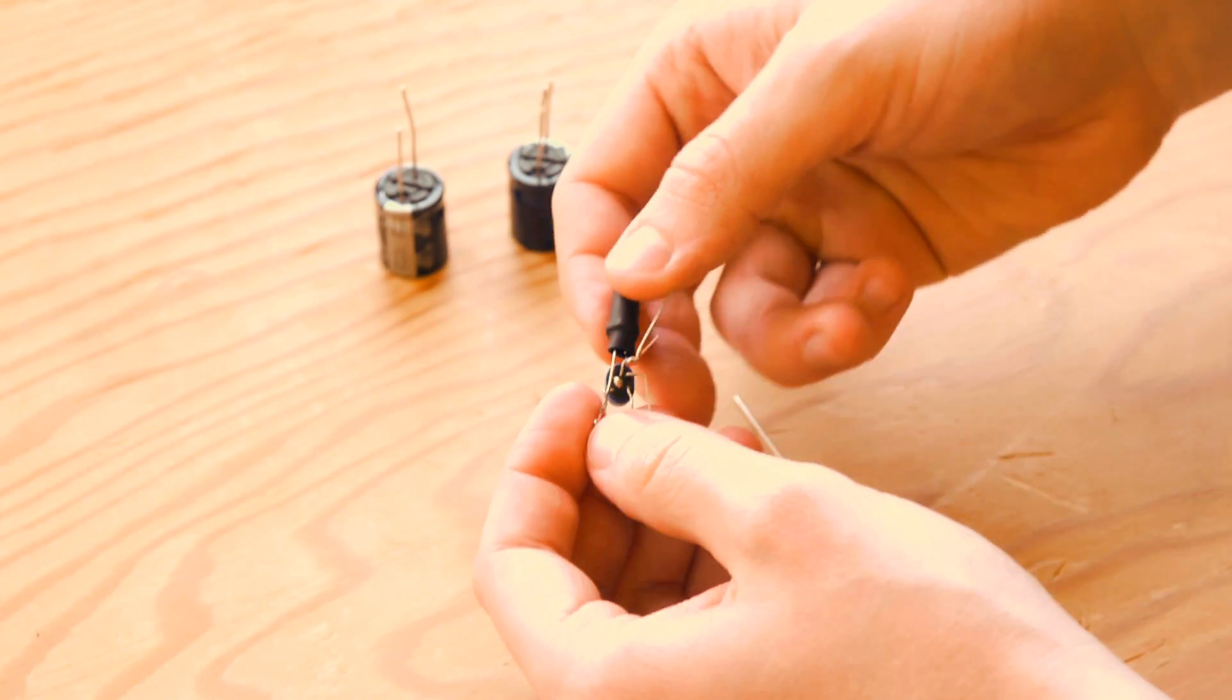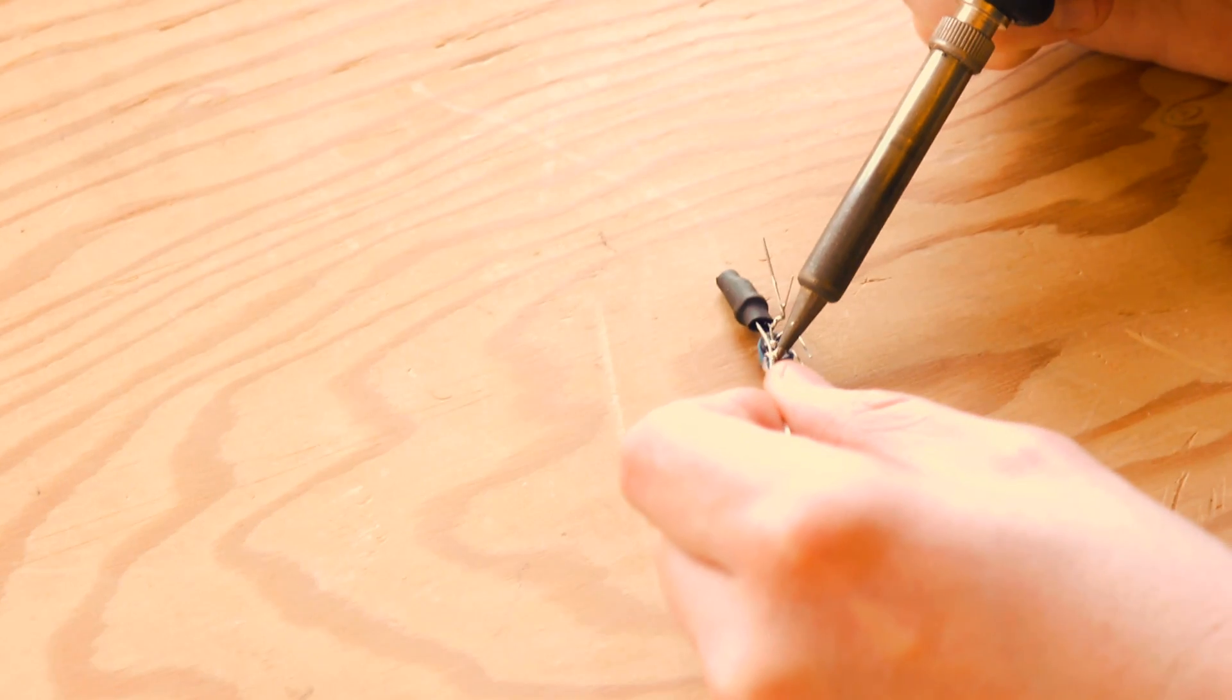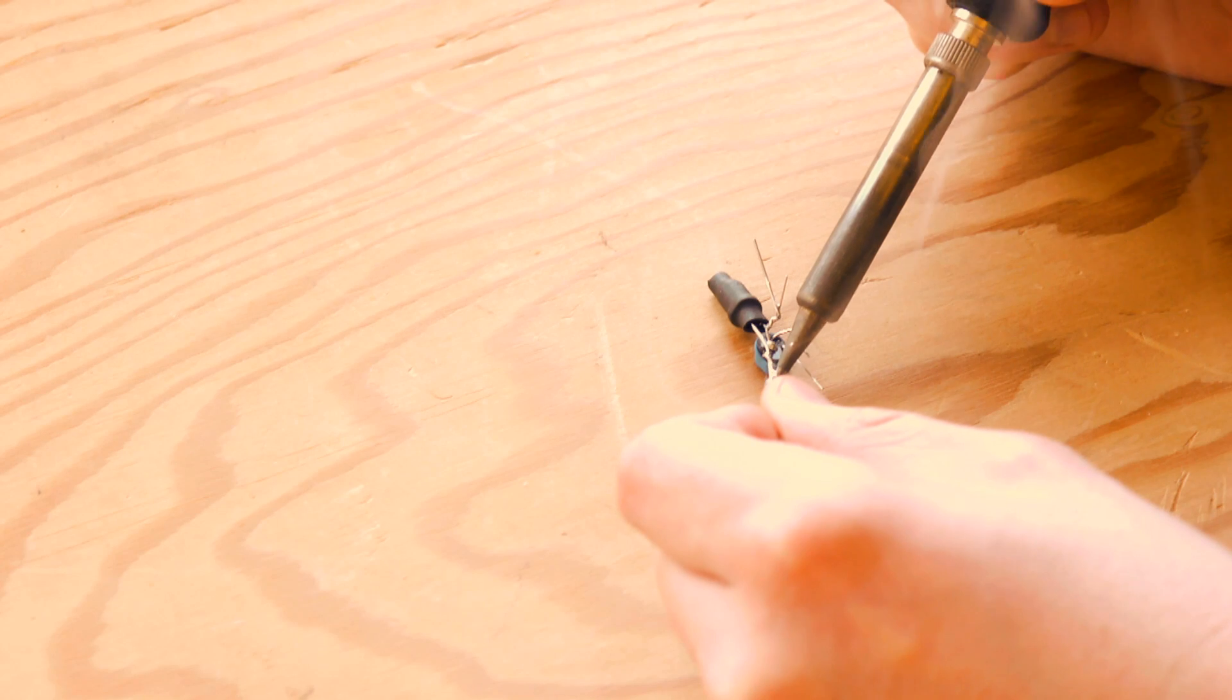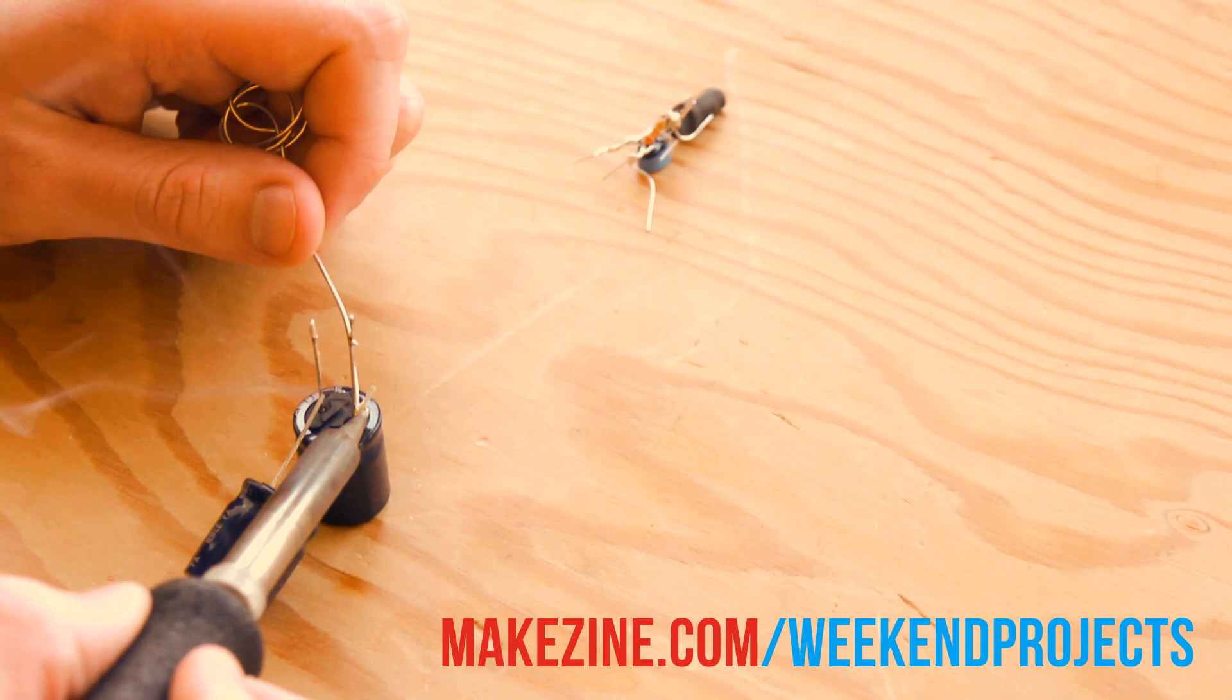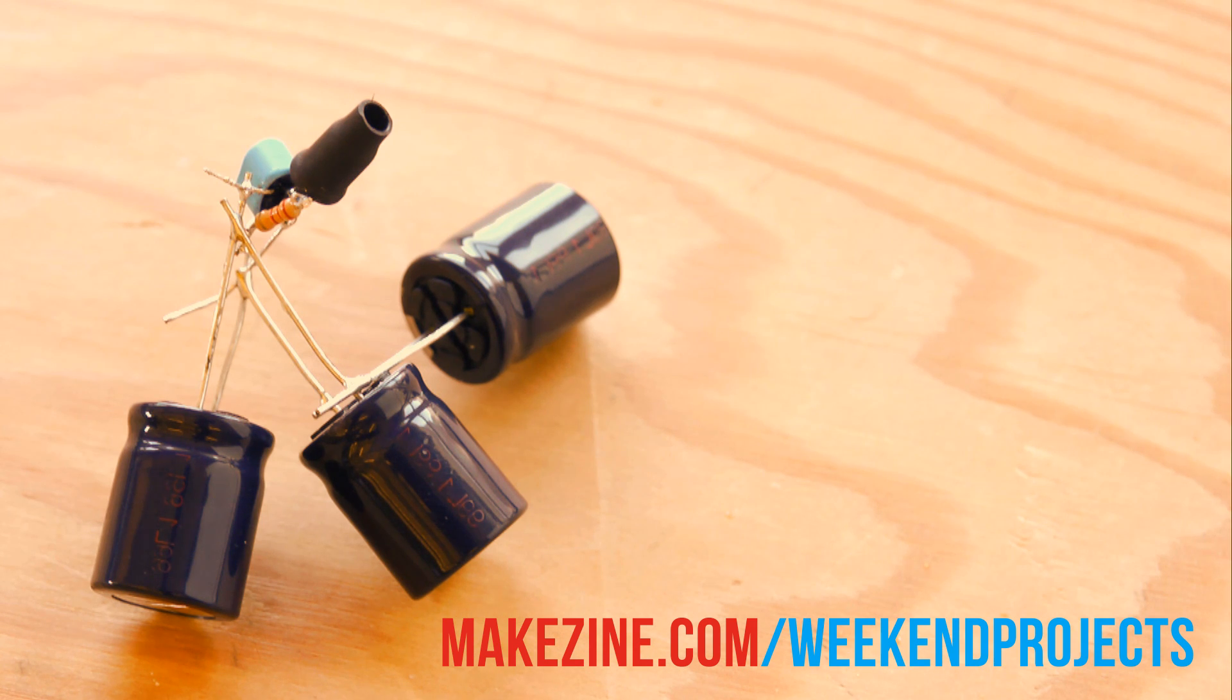Next, wire together the main parts of the solar engine. You'll want to follow the steps on the weekend projects page and consult the circuit illustration provided there. When you're done, your circuit should look like this.